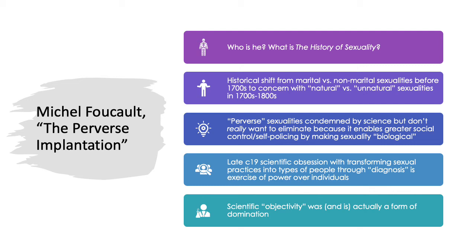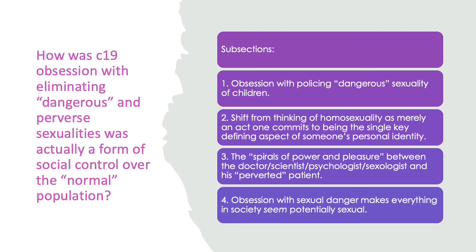By making sexuality into an identity, it becomes a form of exercising power over individuals. For example, if you are a woman who has sex with other women, you are a lesbian — that is your identity — and now you need medical treatment. So even though science claimed to be just discovering new sexual types and making new scientific discoveries into the psychology of sexuality, Foucault is saying that is actually a form of domination and exercising power over people.